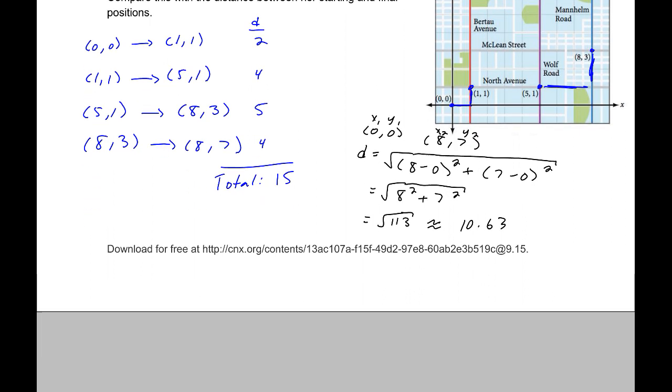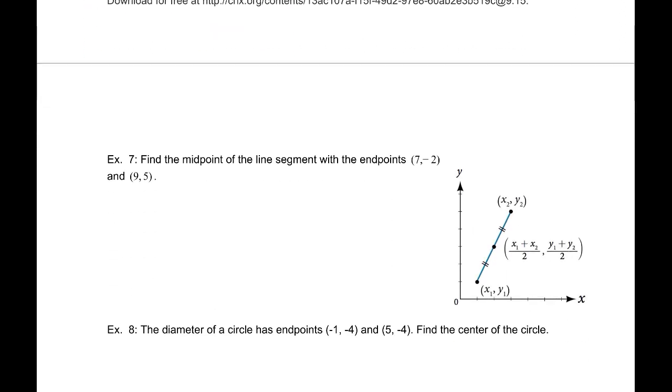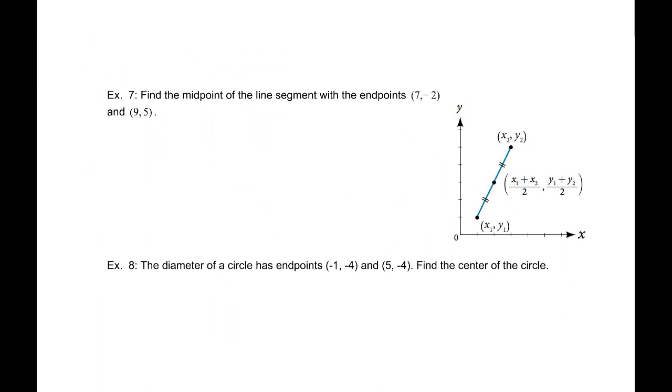Let's look at example 7. Find the midpoint of the line segment with endpoints (7, -2) and (9, 5). So, based on this graph we have over here the midpoint and in fact the bisector here of this line segment is the average of the x values and then the average of the y values.